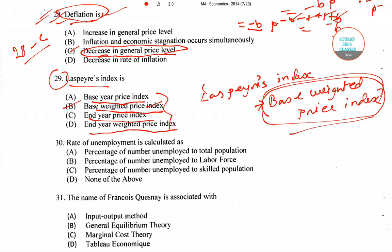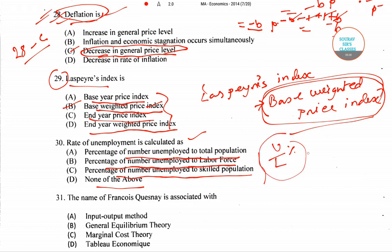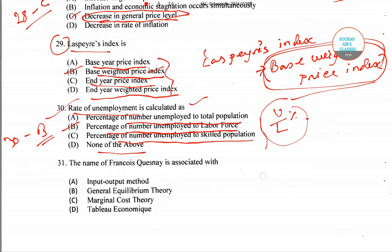Question number 30 asks how the rate of unemployment is calculated. The options include percentage of unemployed to total population, to labor force, or to skilled population. The correct answer is option B — the rate of unemployment is the percentage of unemployed persons to the labor force.